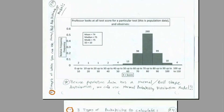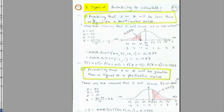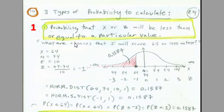Here's our example we're going to do in Excel. A professor looks at all test scores for a particular test — this is population data — and observes a Bell-shaped pattern. Remember, if the distribution for the population follows a Bell shape, then we can use these models. Let's look at the three types of probabilities we're going to calculate.